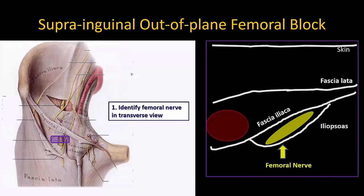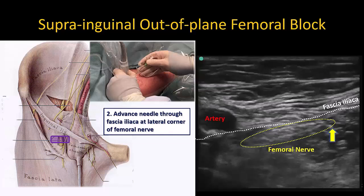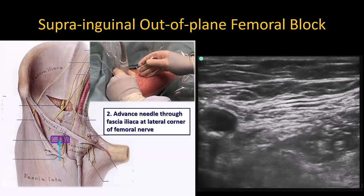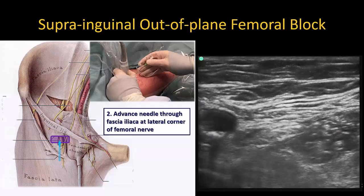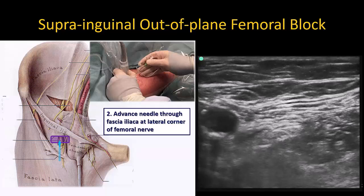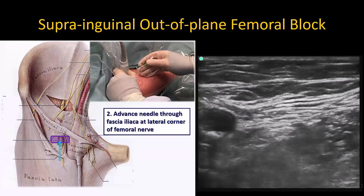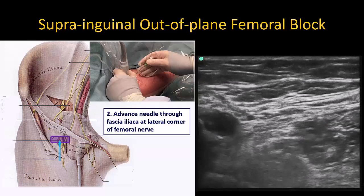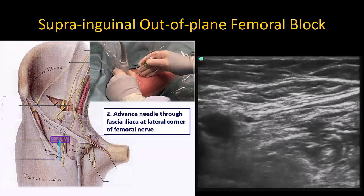Start by imaging and identifying the femoral nerve in transverse cross-section close to the inguinal ligament. This is described in detail in my video on the femoral nerve block, so I will not elaborate further here. Enter the femoral nerve compartment under fascia iliaca, just next to the lateral corner of the nerve, using an out-of-plane approach at a 45-degree angle. The correct needle tip position is confirmed by the expected expansile spread pattern next to the nerve.